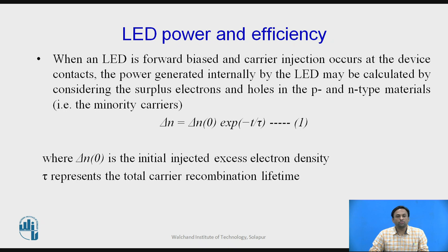When there is absorption of energy from E1 state to the E2 state — that is, from the lower state to the higher state — the electrons due to absorption of energy will jump from the valence band to the conduction band. When they come down, they emit energy in the form of light; these are known as spontaneous emission.